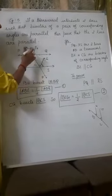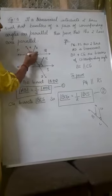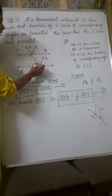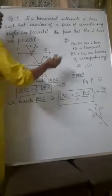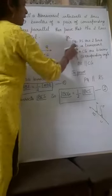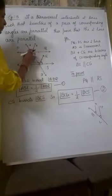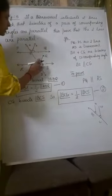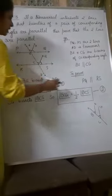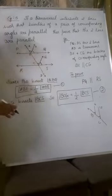Angle bisector means the two angles will be equal. Now, write the given: PQ and RS are two lines. AD is the transversal. BE and CG are the bisectors. And BE is parallel to CG. You have to prove PQ is parallel to RS.